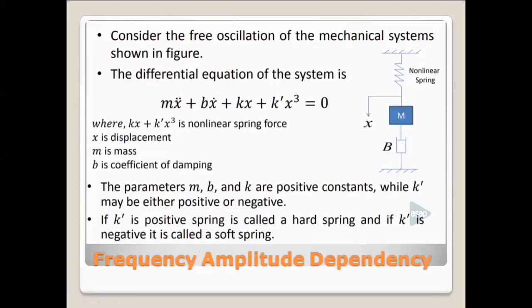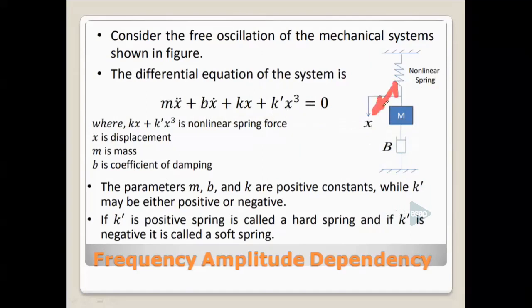Looking in detail at frequency-amplitude dependency, consider a spring-mass-damper mechanical system. The differential equation is: mẍ + bẋ + kx + k'x³ = 0, where x is the displacement, ẋ is velocity, ẍ is acceleration, m is mass, b is damping, k is the spring constant, and k' is associated with the non-linear characteristic. The term kx + k'x³ is the non-linear spring force. The parameters m, b, and k are positive constants, while k' can be positive or negative. If k' is positive the spring is called a hard spring; if k' is negative it is called a soft spring.